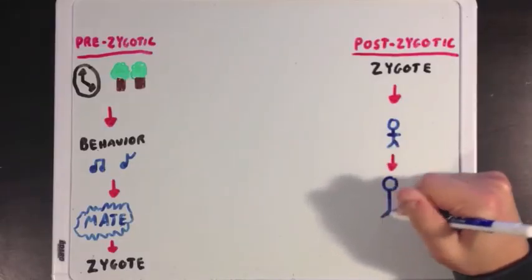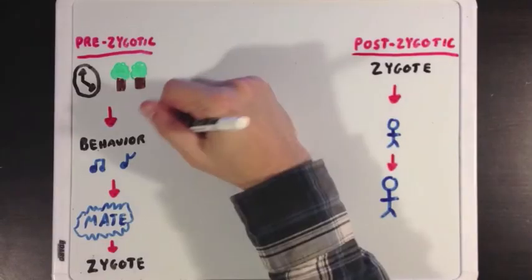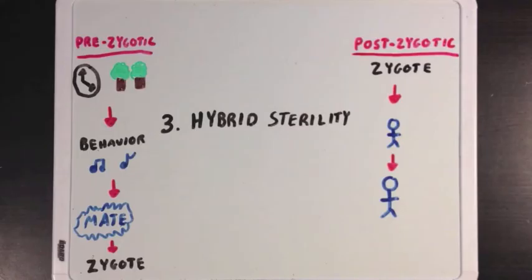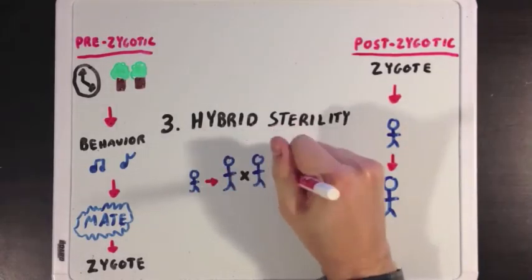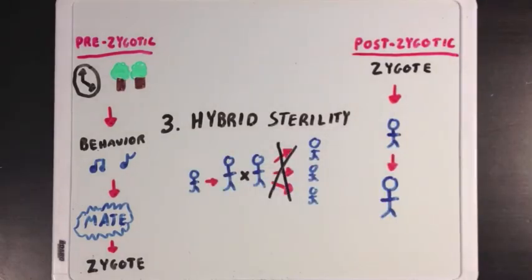Finally, we have the last form of reproductive isolation, which is hybrid sterility. And this is when the offspring can grow into a mature adult, but that mature adult is not able to mate and have offspring of its own.